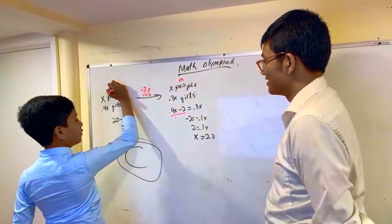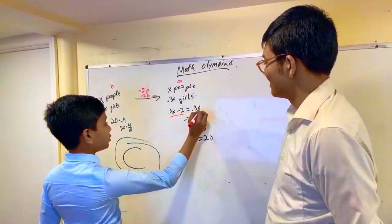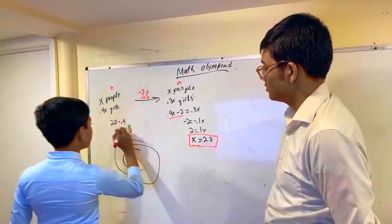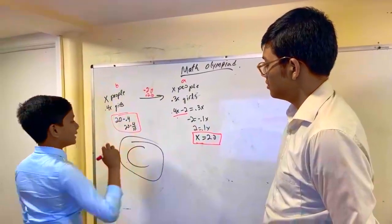This is after, this is before. So point four x minus two is point three x. This tells you the total amount of people in the group. Then you multiply that by point four to get it.